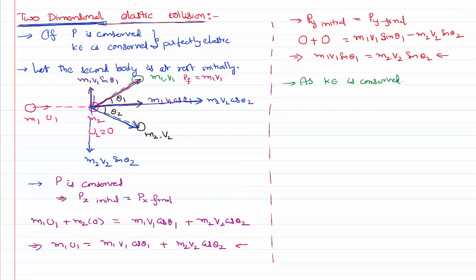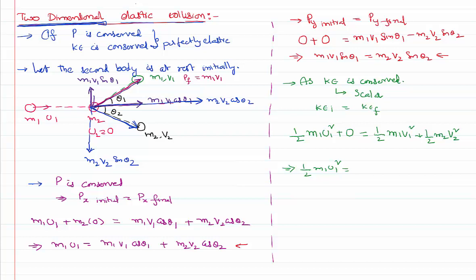Kinetic energy conservation is simpler to analyze because kinetic energy is a scalar quantity — direction does not matter. We write: KE_initial = KE_final. Initially: ½·m1·u1² + ½·m2·u2², but since m2 is at rest, the second term is zero. After the collision: ½·m1·v1² + ½·m2·v2². So the equation becomes: m1·u1² = m1·v1² + m2·v2² (cancelling the ½). These are all the conditions for a two-dimensional elastic collision with the second body initially at rest. Thank you for watching — keep coming back for more video lessons, please subscribe.